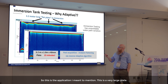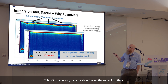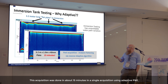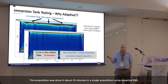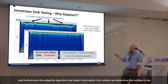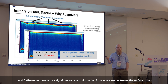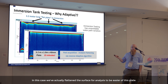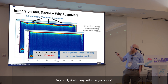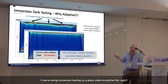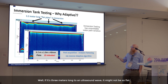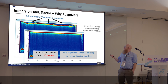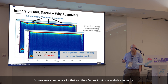This is a very large plate — 3.2 meters long by about one meter wide, over an inch thick. This acquisition was done in about 15 minutes in a single acquisition using adaptive PWI. Furthermore, the adaptive algorithm retains information about where we determined the surface to be. We can go into post-acquisition analysis and actually manipulate that data — in this case, we've flattened the surface for easier analysis. Even for a plate that should be flat, to an ultrasound wave over three meters, it might not be so flat, so we can accommodate for that.